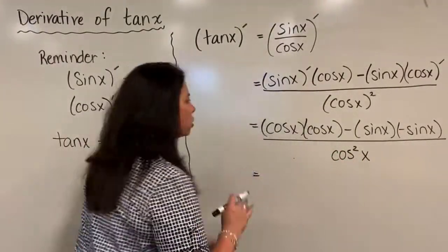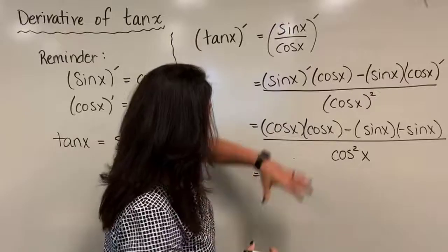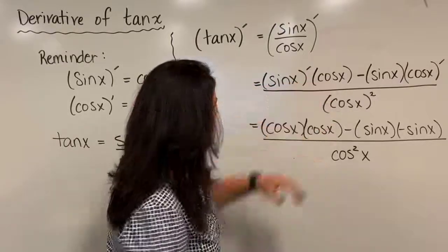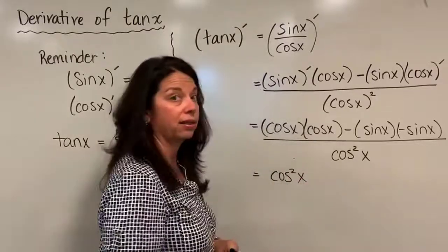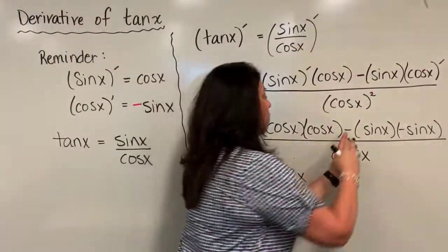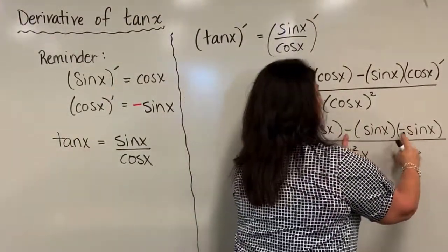Okay so now just to do a little bit of algebra to clean up things. Cosine x times itself again I'm going to have cosine squared x. And then I have minus sine x times a negative sine x.